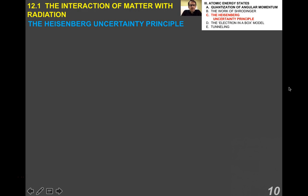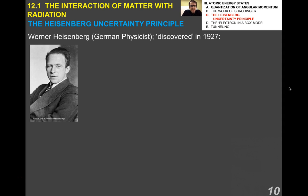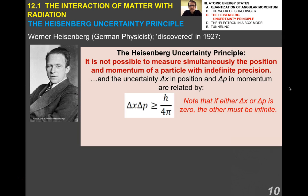All right students, this is our last video for topic 12.1. I'm going to talk about the Heisenberg Uncertainty Principle. We talked about wave functions and probability functions in the last video. The next step in using these ideas was proposed by Werner Heisenberg. He discovered or invented, depending on your point of view, something called the Heisenberg Uncertainty Principle.